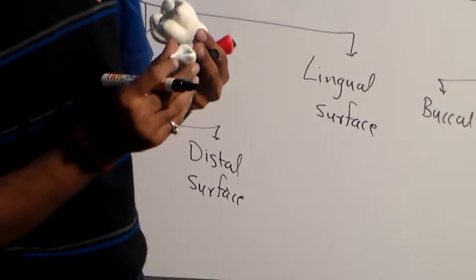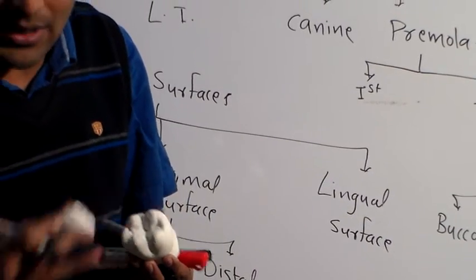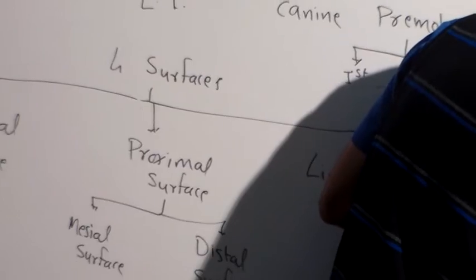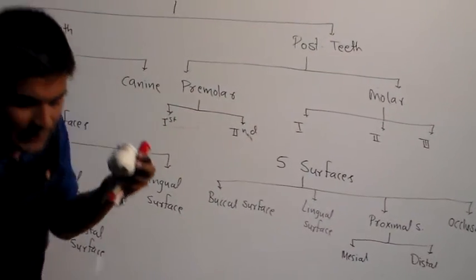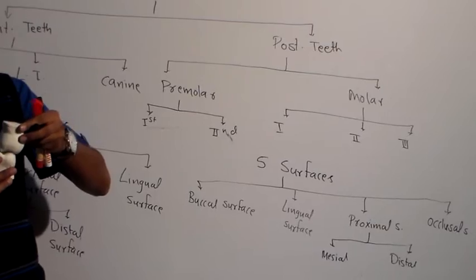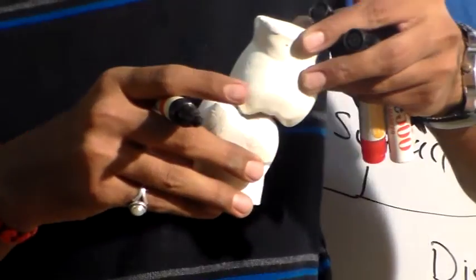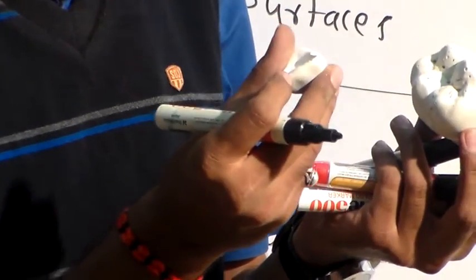In anterior teeth there is no occlusal surface because they have a sharp incisal edge used for incisive cutting — that is why they are called incisors. For posterior teeth, we use the term occlusal surface, where the two opposite teeth directly come into contact and are used for grinding motion.